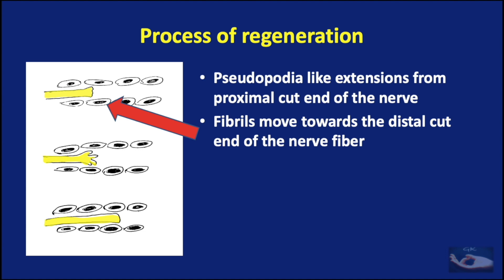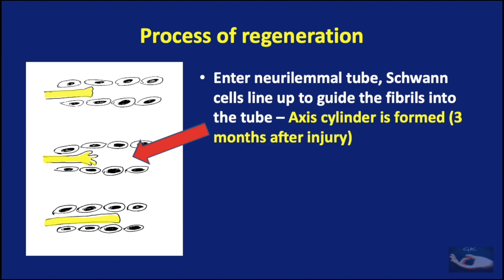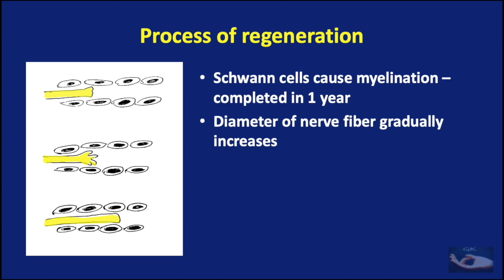The cut axon starts growing as pseudopodia-like extensions from the proximal cut end. These fibrils move towards the distal cut end of the nerve fiber, then enter the neurolemmal tube formed by Schwann cells that have lined up to guide the fibrils. When the growing axon enters the neurolemmal tube, it is called the axis cylinder. This occurs about three months after the injury. Once the axis cylinder is formed, the Schwann cells begin myelination, which is completed in about a year, and the diameter of the nerve fiber gradually increases.